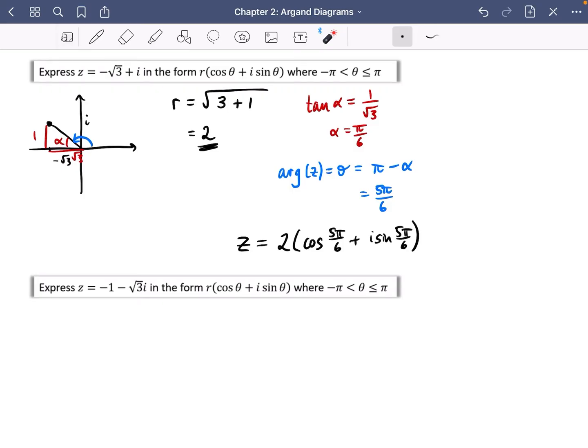Okay, let's try the next one. Looks similar, but it's slightly different, kind of switched around. So again, we're going to start off with a sketch. Minus one over here, and now minus root three downwards.